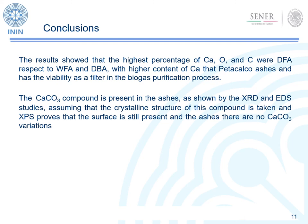As a conclusion, the results show the highest percentage of calcium, oxygen, and carbon in dry fly ashes compared to the other two. Dry fly ash is viable as a filter in the biogas purification process. The calcium carbonate compound is present in the ashes, as shown by X-ray diffraction and EDS study as crystalline structure, and X-ray photoelectron spectroscopy probes that this compound at the surface is still present.